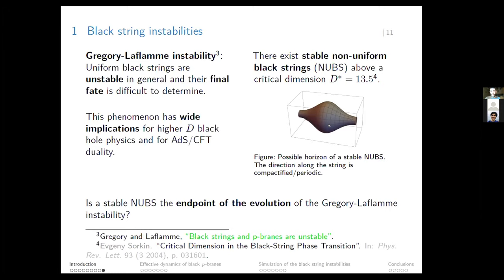An important thing to make non-uniform black strings stable is that the direction along the string is taken to be periodic or compactified—if you go through one end you come back through the other. A question we can ask is: when we have these stable non-uniform black strings, could they be the endpoint of the evolution of the instabilities that Gregory and Laflamme found? This will be a central question in this presentation.